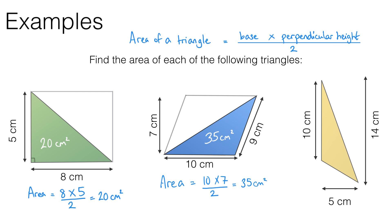So these two happen to be two sides of the triangle, whereas if we go back to the blue one, I couldn't multiply those two sides of the triangle — the 10 centimetre and the 9 centimetre sides — because they are not perpendicular to each other. Finally we've got the third triangle, the yellow one on the right hand side. Pause the video and see if you can work out the answer to this one.